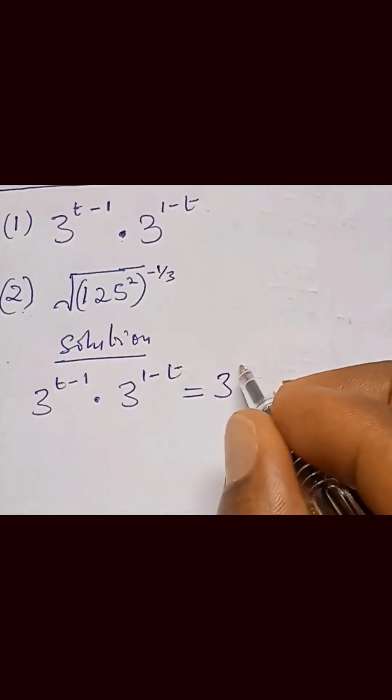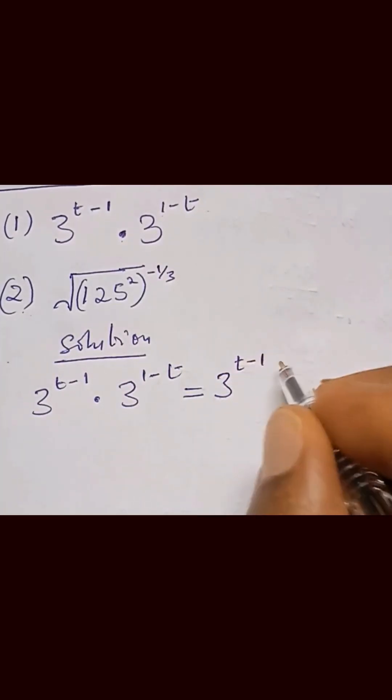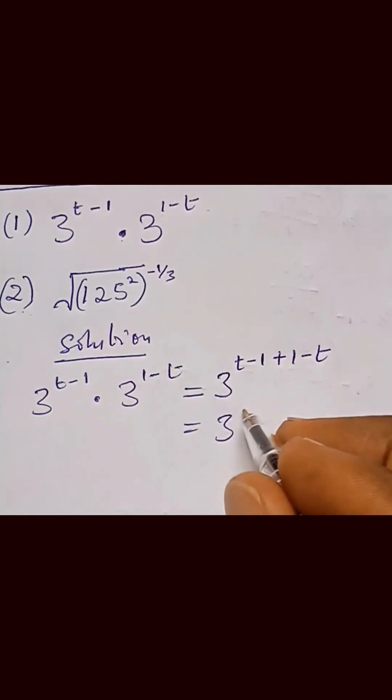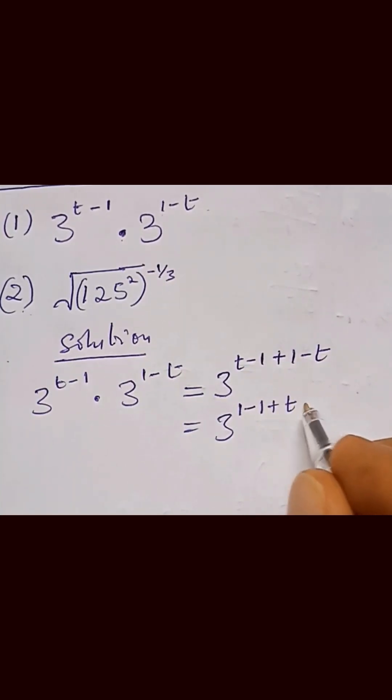So we have 3 raised to the power t minus 1 plus 1 minus t. Rearranging this, we get 1 minus 1 plus t minus t.